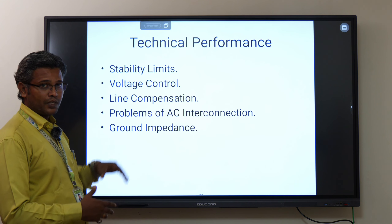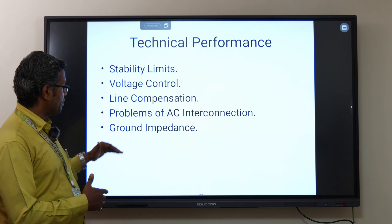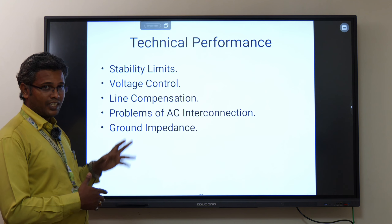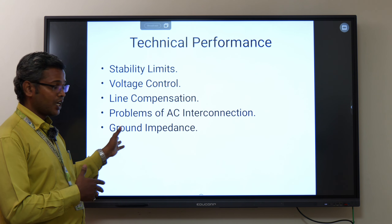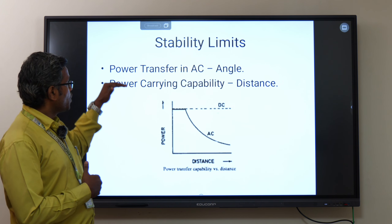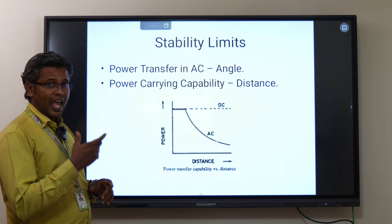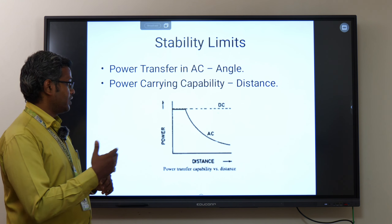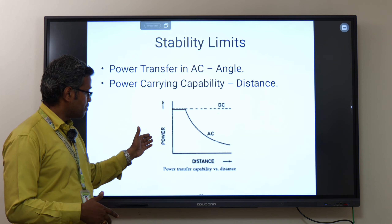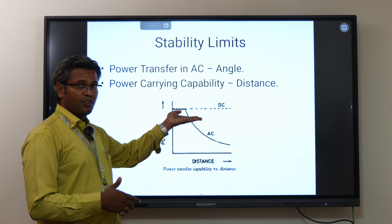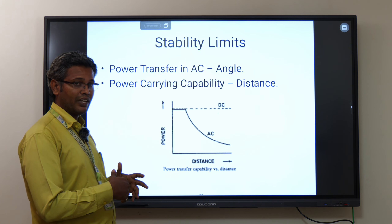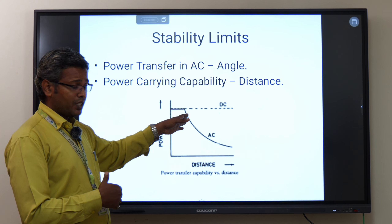Next, with respect to technical performance, we consider five parameters: stability limits, voltage control, line compensation, problems of AC interconnections, and ground impedance. For stability limits, power transfer in AC depends upon the voltage angle between the two ends. For DC, the power transfer capability is constant — it does not vary with distance — which is why for long transmission we prefer DC.